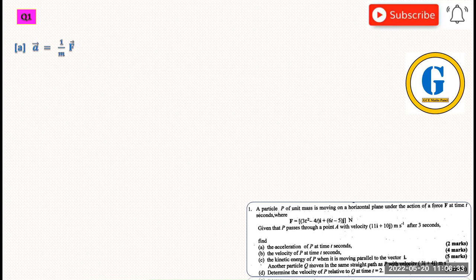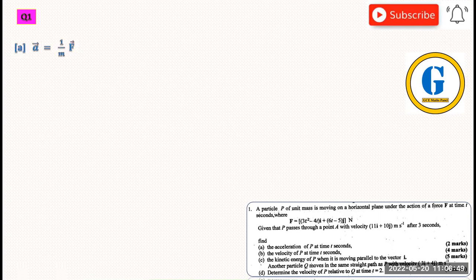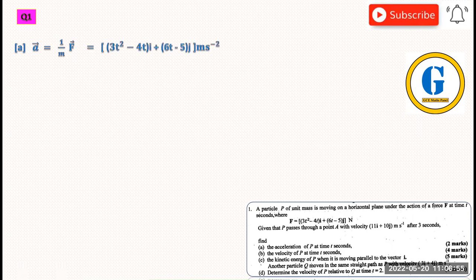The first thing we have to look for here is the acceleration of the particle. We have been told that the particle has unit mass, which means in SI units it's just 1. We know that acceleration equals force divided by mass. So this will give us the same value because the force divided by 1 gives us the same result.